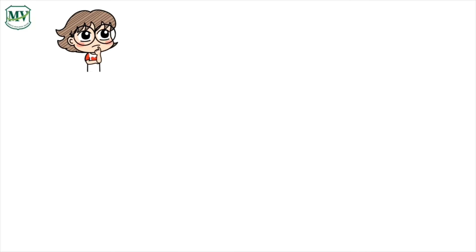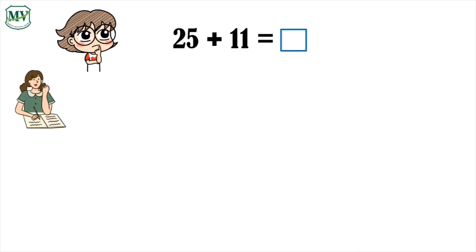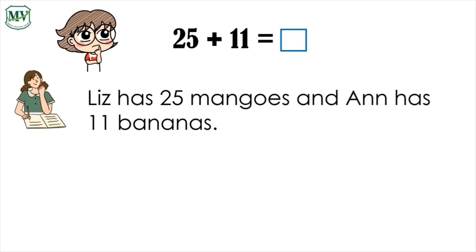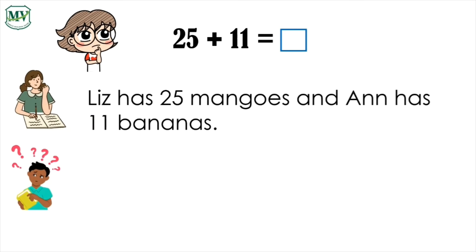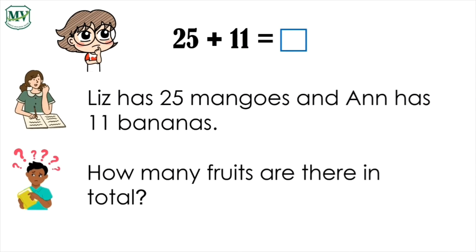Let's practice. Let's think of a math idea. The math idea is 25 plus 11 equals blank. Let's make a story about these numbers: Liz has 25 mangoes and Anne has 11 bananas. Let's ask our question: how many fruits are there in total?